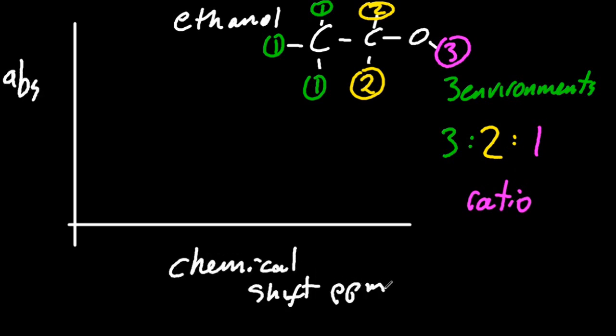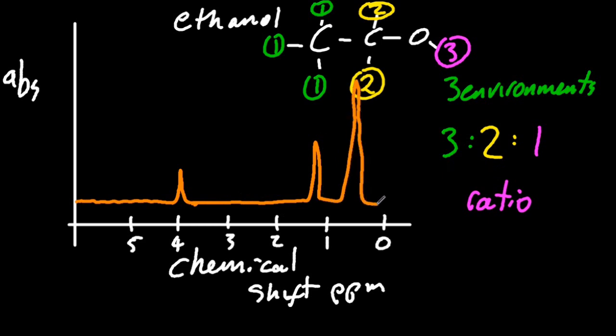To work out where the peaks would go, you'd have to look in the data booklet. PPM are the units for chemical shift. Don't worry too much about that. So there's one peak, another peak, and finally a third peak. One peak for each environment. And the area is proportional to the ratio of the hydrogens in each of those environments.